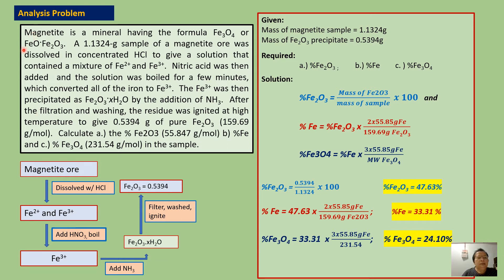Now, I'm going to solve another gravimetry problem. Magnetite is a mineral having the formula Fe3O4 or FeO·Fe2O3. A 1.1324 grams of magnetite ore was dissolved in concentrated hydrochloric acid to give a solution that contained a mixture of Fe2+ and Fe3+ ions. Nitric acid was then added and the solution was boiled for a few minutes,